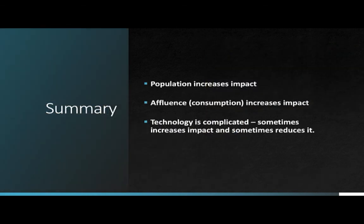To quickly summarize: population tends to increase impacts. Affluence — or more specifically consumption — tends to increase impacts, except in cases where wealth is used specifically to reduce environmental impacts. And then there's technology, which is complicated and has in some cases great potential to harm the environment, and in other cases great potential to reduce impacts. We'll cover all of this in much more detail as we move forward in the course.